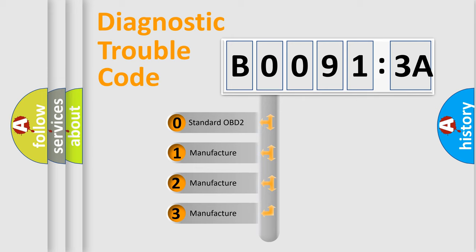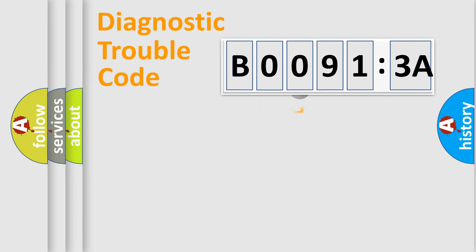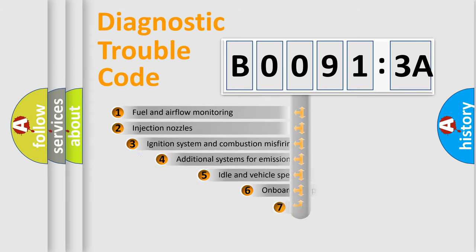If the second character is expressed as zero, it is a standardized error. In the case of numbers 1, 2, or 3, it is a manufacturer-specific expression of the car-specific error.